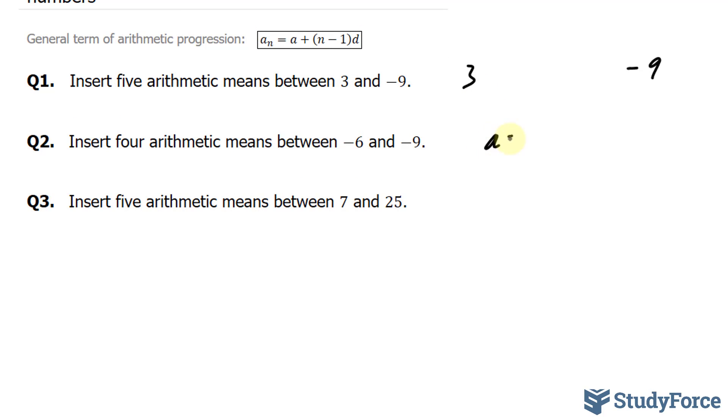We know that a, the first term in this series, is 3. And that there are seven numbers in total, so n equals 7. And because there are seven numbers in total, this being the first and this being the last, this is the seventh term. So a subscript 7 is negative 9.